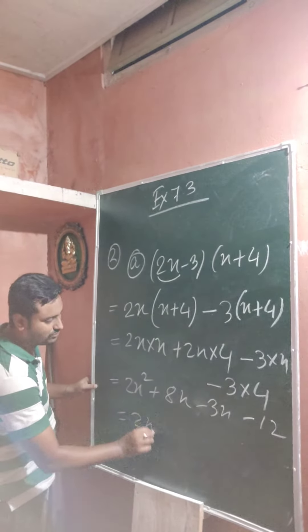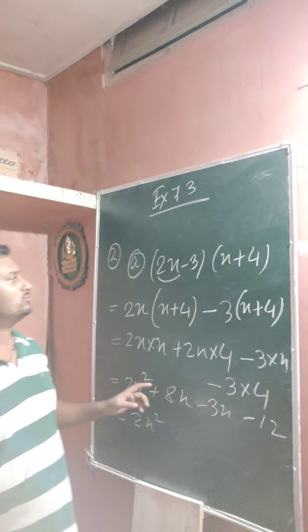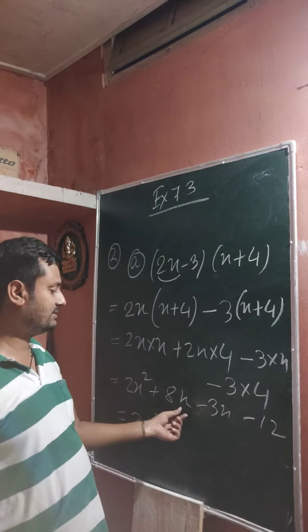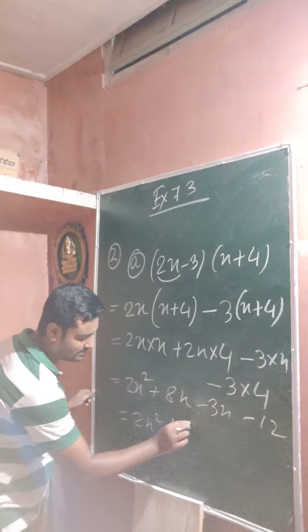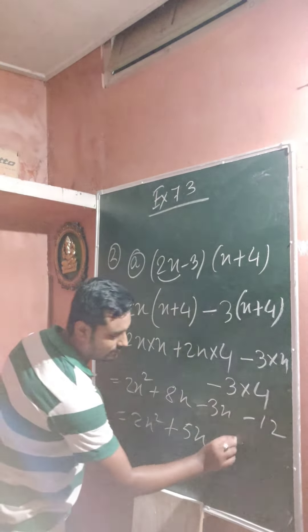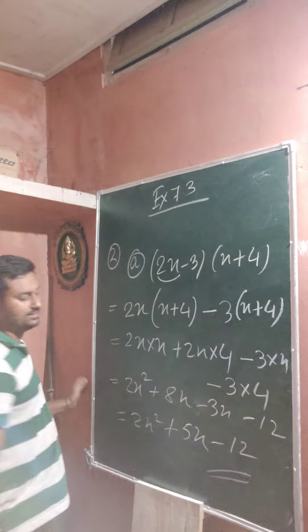So 2x squared. These two terms are same. 8x minus 3x becomes 5x minus 12. Which is the answer.